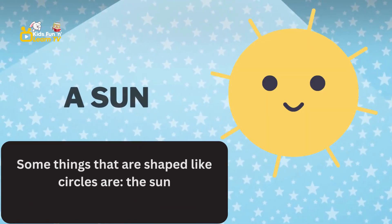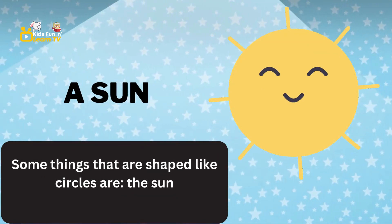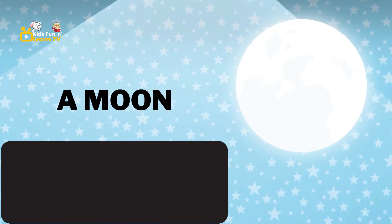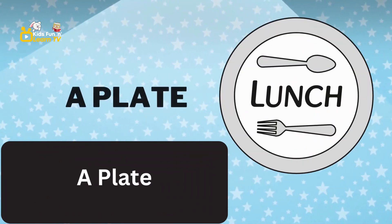Some things that are shaped like circles are the sun, the moon, a ball, a plate, and a pizza.